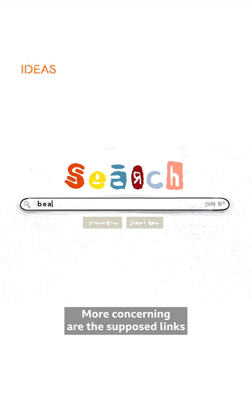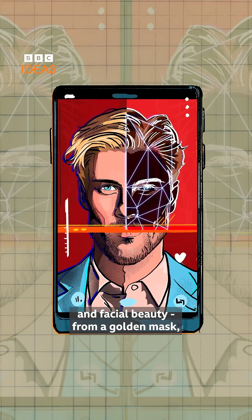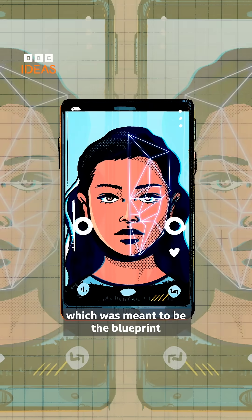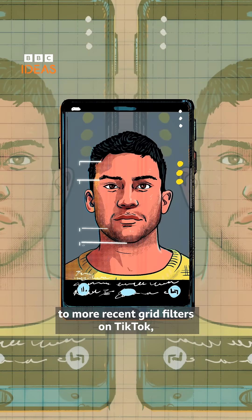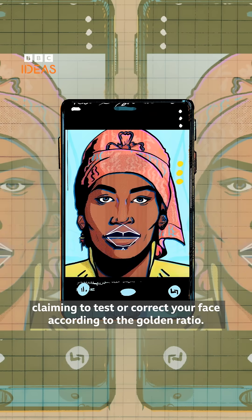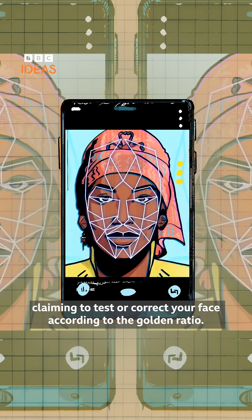More concerning are the supposed links between the golden ratio and facial beauty, from a golden mask which was meant to be the blueprint for the perfect face, to more recent grid filters on TikTok claiming to test or correct your face according to the golden ratio.